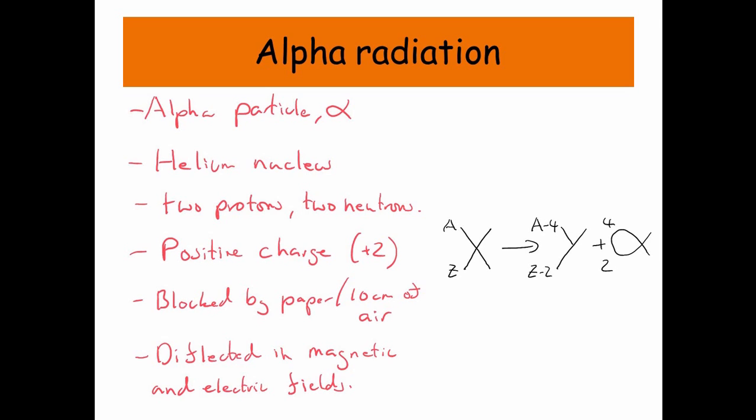The nucleon number goes down by four, so whatever nucleon number you started off with, A, well that reduces by four because two protons and two neutrons, four nucleons have been lost from the nucleus. And also the proton number reduces by two because you've just lost two protons in those four nucleons that left.